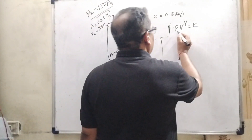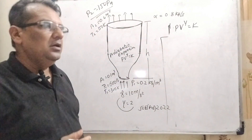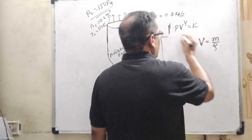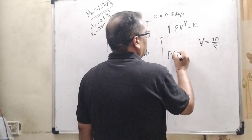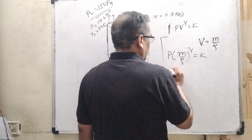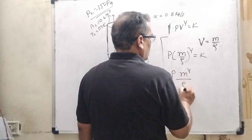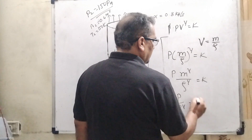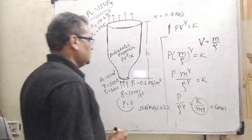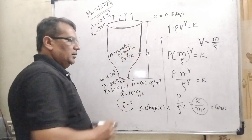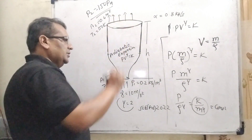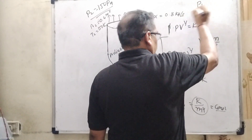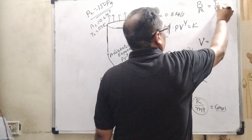Now again using PV raised to power gamma equal to K, but writing volume V as mass upon density. Substituting: P times (M/rho) raised to power gamma equals K, giving P upon rho raised to power gamma equals constant divided by M raised to power gamma. Since mass is constant — no gas accumulates anywhere — we get P1/P2 equal to rho1 raised to power gamma upon rho2 raised to power gamma.